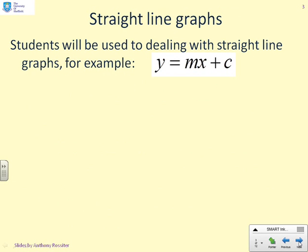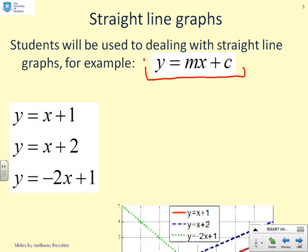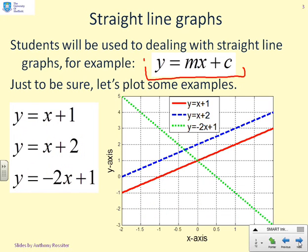Let's start by looking at straight line graphs, which people normally consider as linear. Here I've given a typical example of a straight line graph, y equals mx plus c. Let's give a number of examples: y equals x plus 1, y equals x plus 2, y equals minus 2x plus 1, and I've sketched all those diagrams for you. You can see they clearly give straight lines, and people usually call these linear equations.